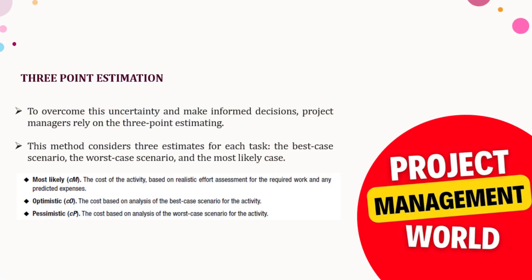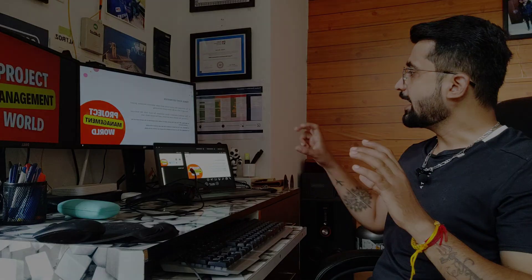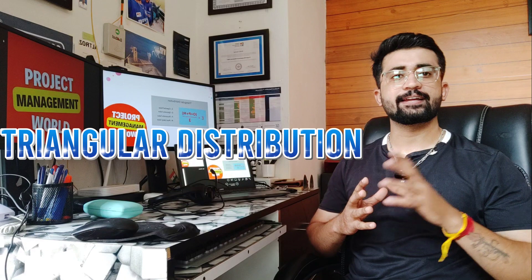The three-point estimation technique considers three estimates for each task: the best case scenario, which is optimistic; the worst case scenario, which is pessimistic; and the most likely case. The most likely is a realistic effort that the activity generally takes. Optimistic is when everything goes smoothly, and pessimistic is the worst case scenario.